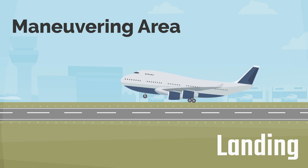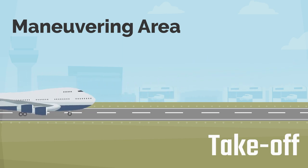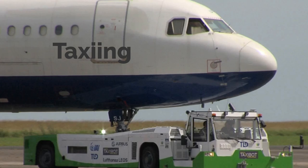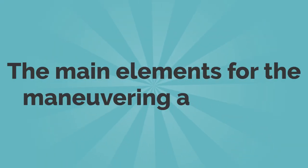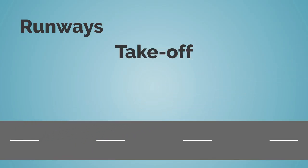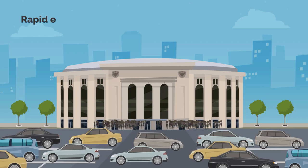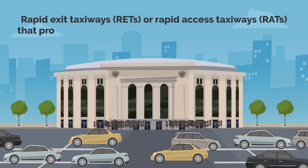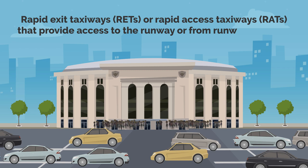Manoeuvring area is the part of the airport used for the landing and takeoff of aircraft and for taxiing. The main elements for the manoeuvring areas are runways, used for landing and takeoff of aircraft, rapid exit taxiways (RETs), or rapid access taxiways (RATs), that provide access to the runway or from runway or taxiway holding position.